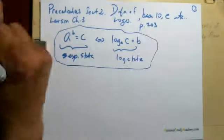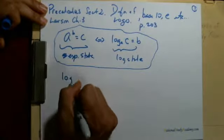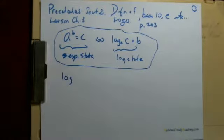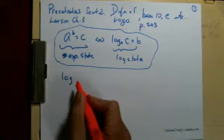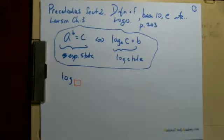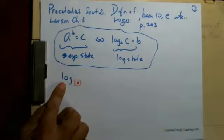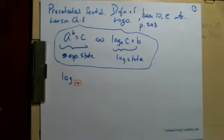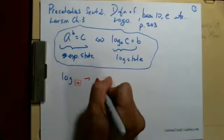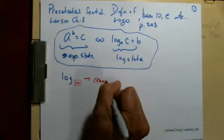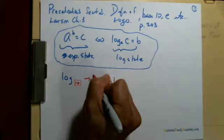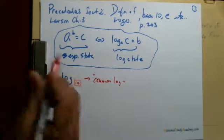So what is base 10? If you go log and there's nothing there, it's kind of empty right there, then that means this is going to be base 10. If it's log base 10, the way we read it is we read it common log. So if you say common log, it means base 10.